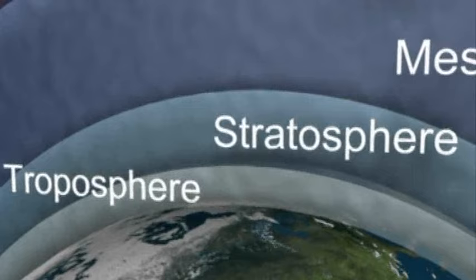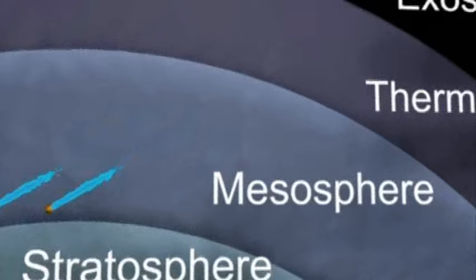Weather occurs in the troposphere. The stratosphere contains ozone which filters much of the sun's harmful UV rays, and meteors disintegrate in the mesosphere, then follows the thermosphere and exosphere.